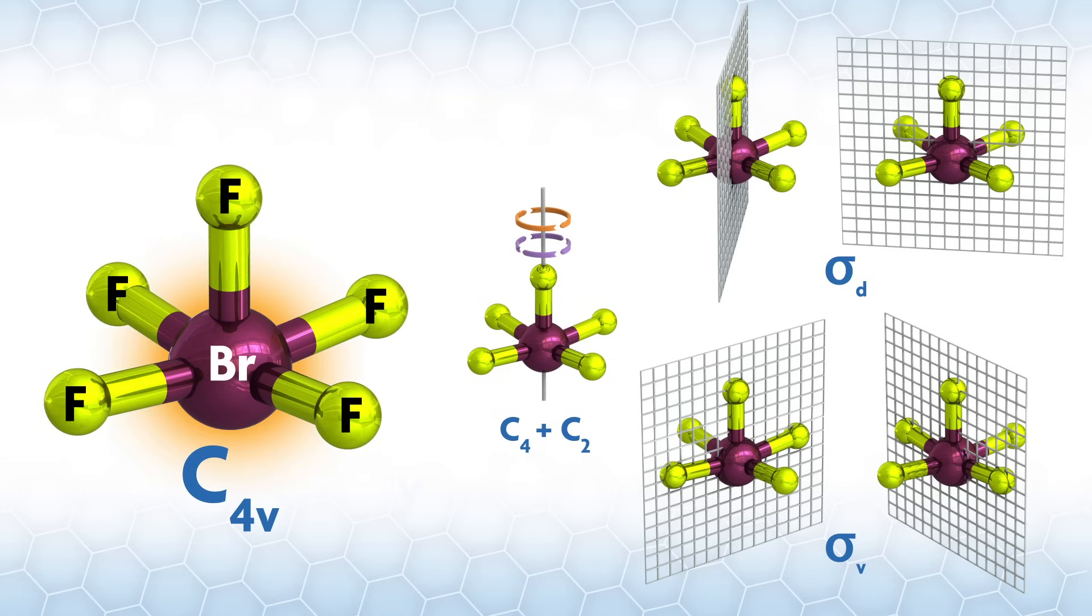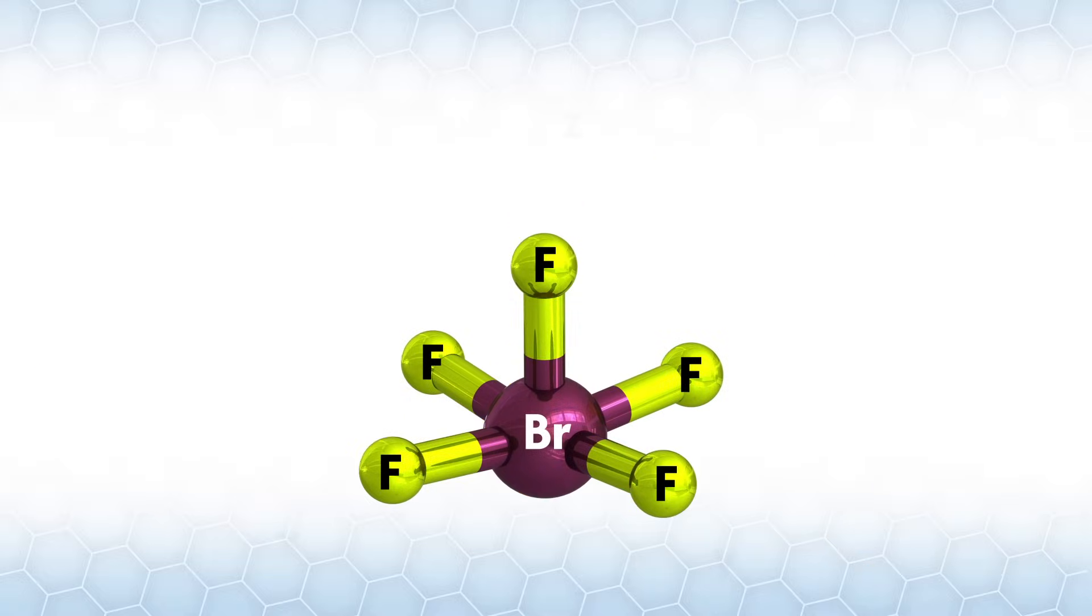Using our BrF5 example, we will write out the molecule with appropriate axes. As discussed in the group theory video, the principal rotation axis is almost always the highest order rotation axis, which we'll call Z. In this case, the Z axis will be along the axial F-Br bond of the square pyramidal structure. We'll put the X and the Y axes along the Br-F bonds in the equatorial plane.